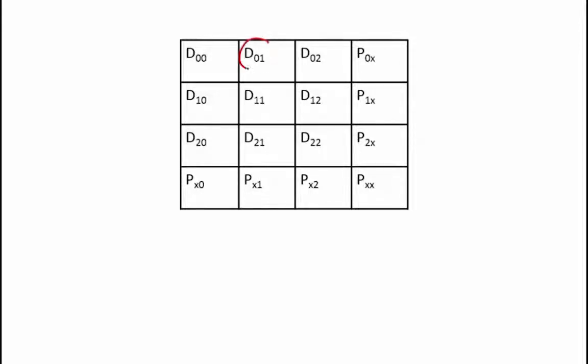Suppose that I want to change D01 from a 0 to a 1. The first thing changing is my data bit itself. Then, P0X would get flipped because I just added another 1 to my row, which means that I need to flip the parity bit in order for the total number of 1's in my row to remain odd.